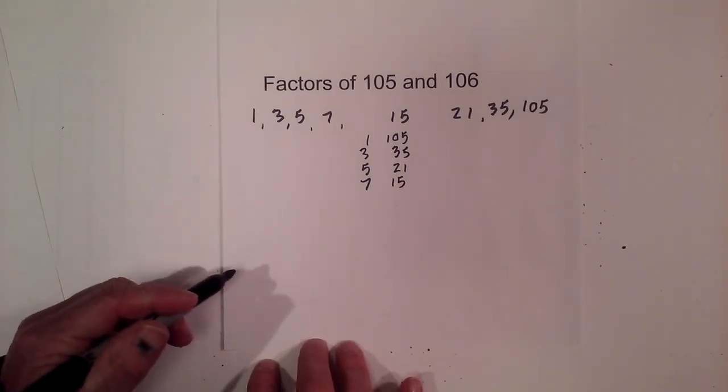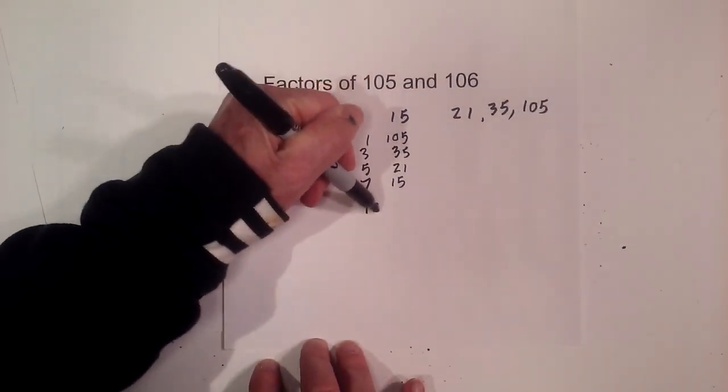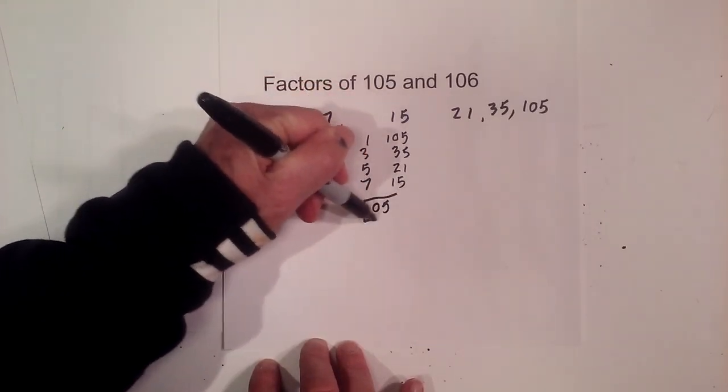The prime numbers of 105, I'll complete a factor tree, so I have 105, let's put it in a little box.